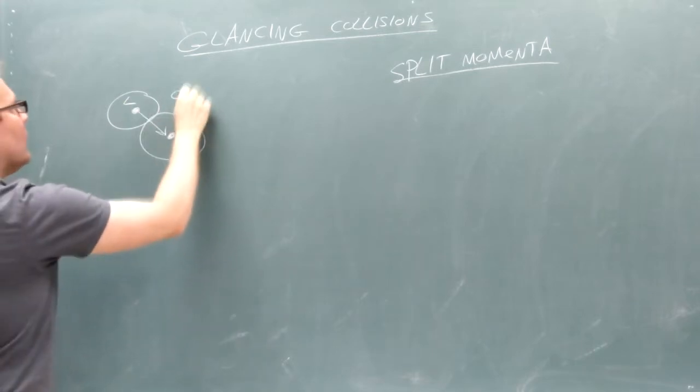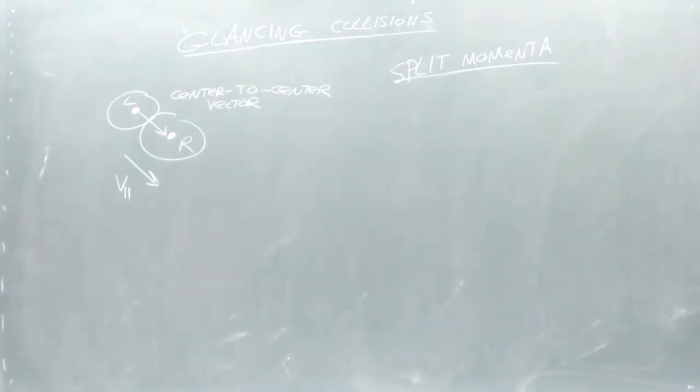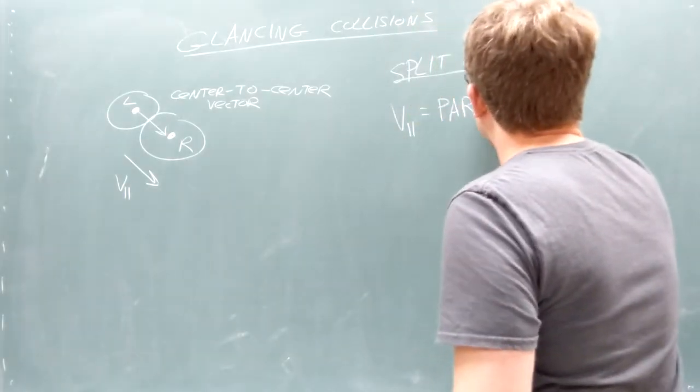First, we need to think of a vector pointing from the center of the left collider to the center of the right collider. Part of the collider's velocities will point parallel to this vector. We'll call this the parallel pieces of the velocities.